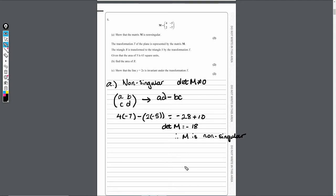Part B now, so we're told that the transformation T of the plane is represented by the matrix M. The triangle R is transformed to the triangle S by the transformation T, and we're given that the area of S is 63 square units. So we've now got to find the area of R. We've just got to be aware of the fact of the area scale factor for determinants.